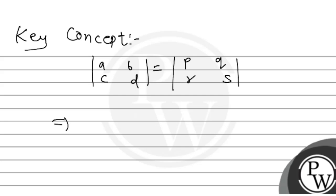Then what are we going to do? The determinant will be: a times d minus b times c, equals p times s minus q times r. This is the key concept.